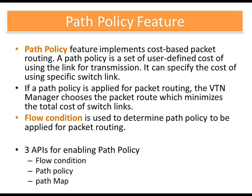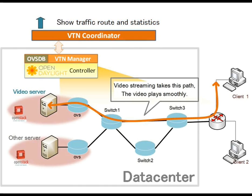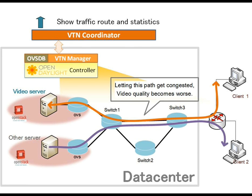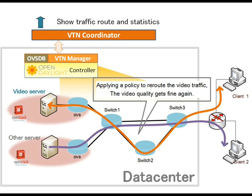VTN Manager provides three APIs for enabling the path policy feature: the flow condition API, the path policy API, and the path map API. For this demonstration, a video will be streamed to client one via the OpenFlow network from the video server. The path taken by the video traffic is: video server → switch one → switch three → client one. Additional traffic is added to this path by sending traffic from other server to client two, making it congested. This deteriorates the video quality streamed to client one. Using the path policy feature, we can redirect traffic to an alternate path: switch one → switch two → switch three, which improves the quality of the video streamed to client one.